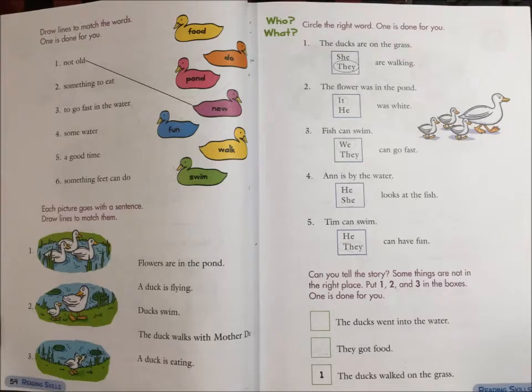Unit 4, Lesson 2. Continue. Draw lines to match the words: food, do, pond, do, fun, walk, swim.